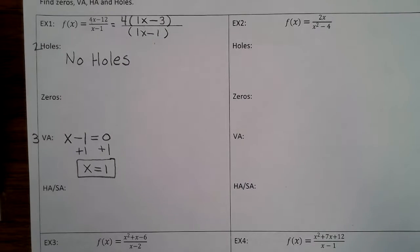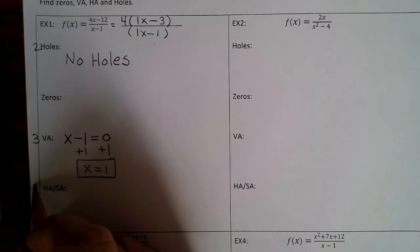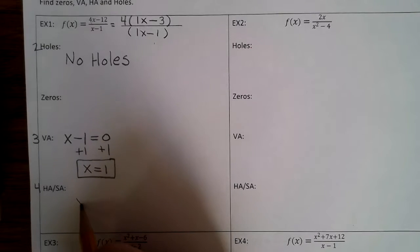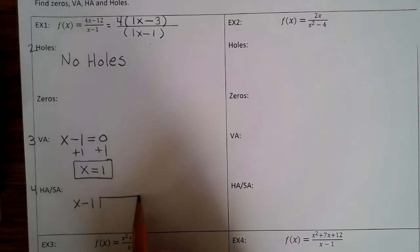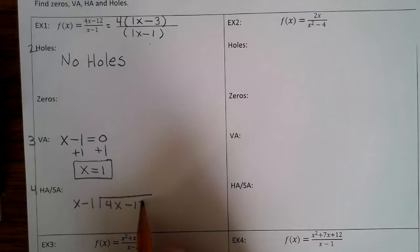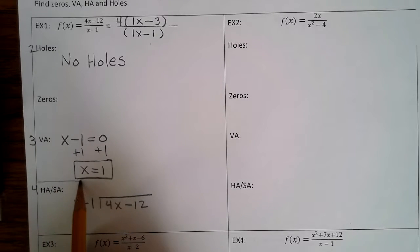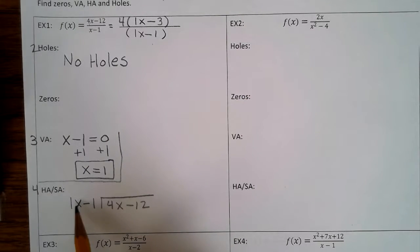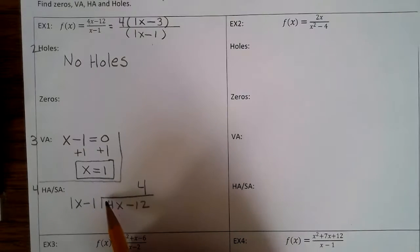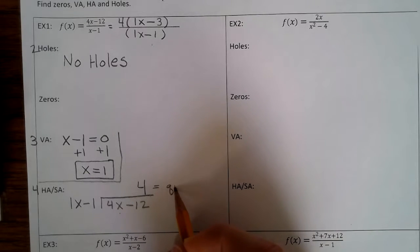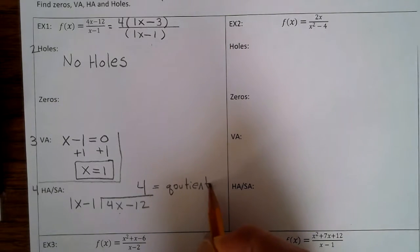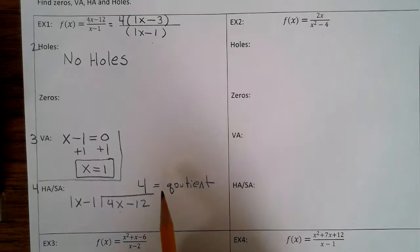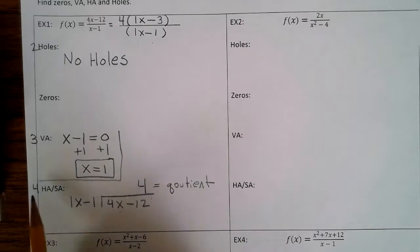The next step is to find the horizontal asymptote or slant asymptote by long division — that's step 4. We divide x minus 1 into 4x minus 12. Ask yourself: what do you multiply 1x by to give you 4x? The answer is 4. The result on top of the division line is called the quotient. Since there's no x in the quotient, it's a horizontal asymptote at y equals 4.